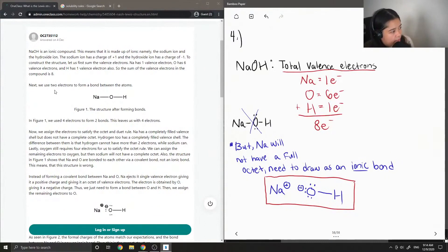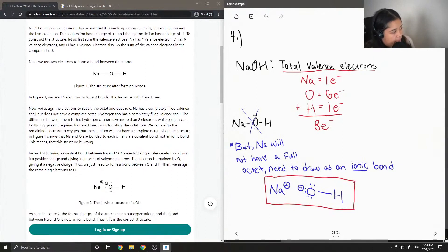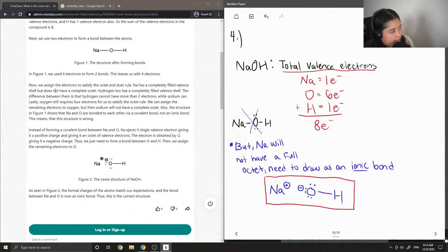Next, we use two electrons to form a bond between the atoms. In figure one, we use four electrons to form two bonds. This leaves us with four electrons. Now, we assign the electrons to satisfy the octet and duet rule. Sodium has a completely filled valence shell, but does not have a complete octet. Hydrogen, too, has a completely filled valence shell. The difference between them is that hydrogen cannot have more than two electrons, while sodium can.